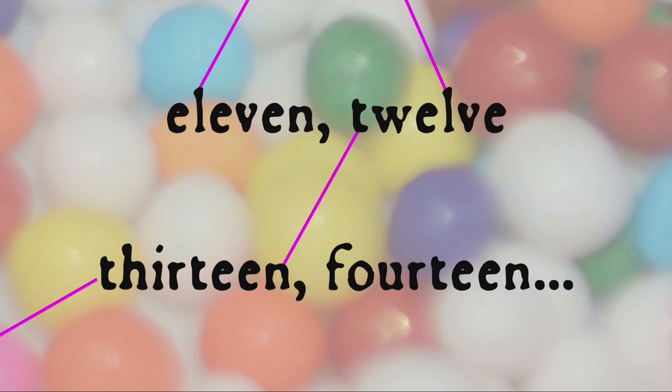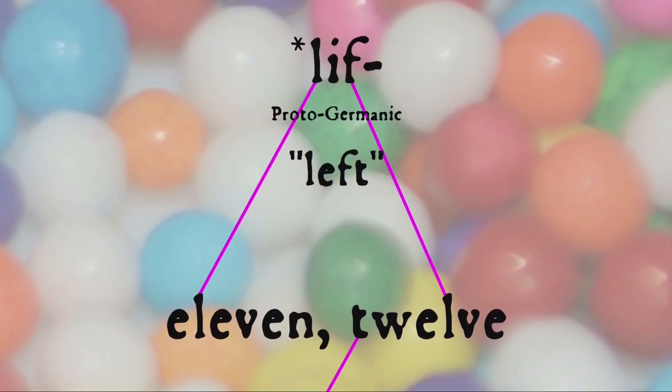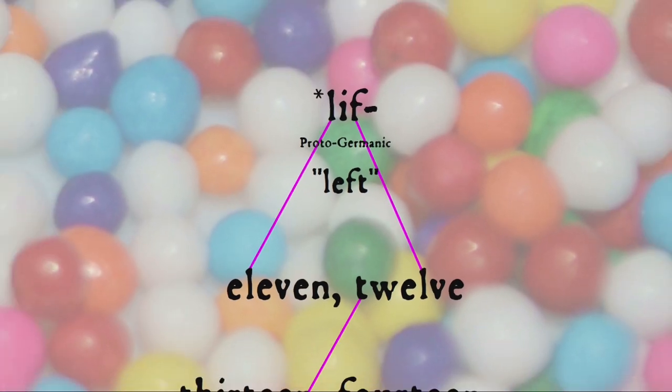...but they're still reckoned from the ten, so eleven means literally 'one left after the initial count of ten,' and twelve is similarly 'two left after the initial count of ten,' so it's still really a base-ten system.